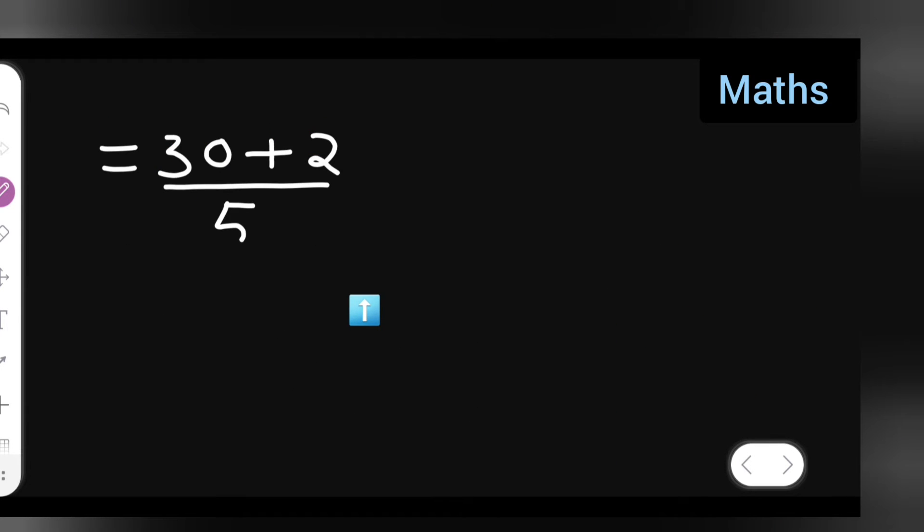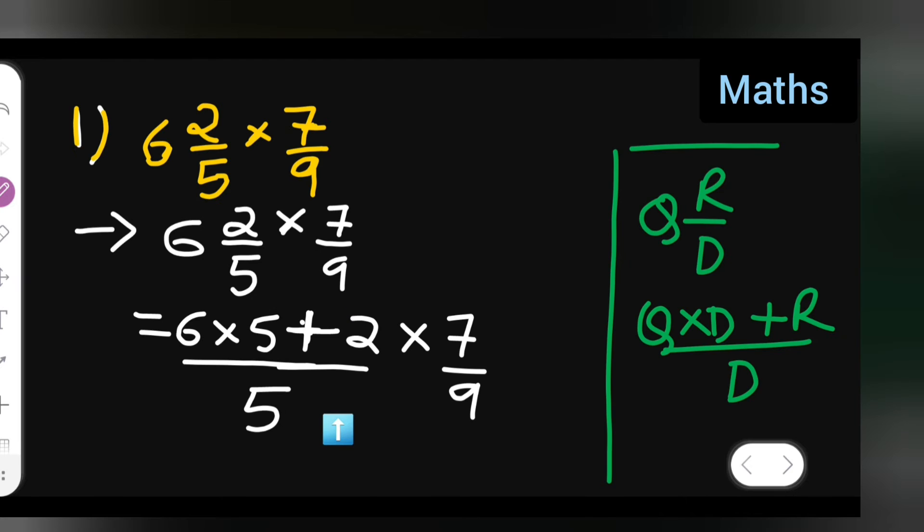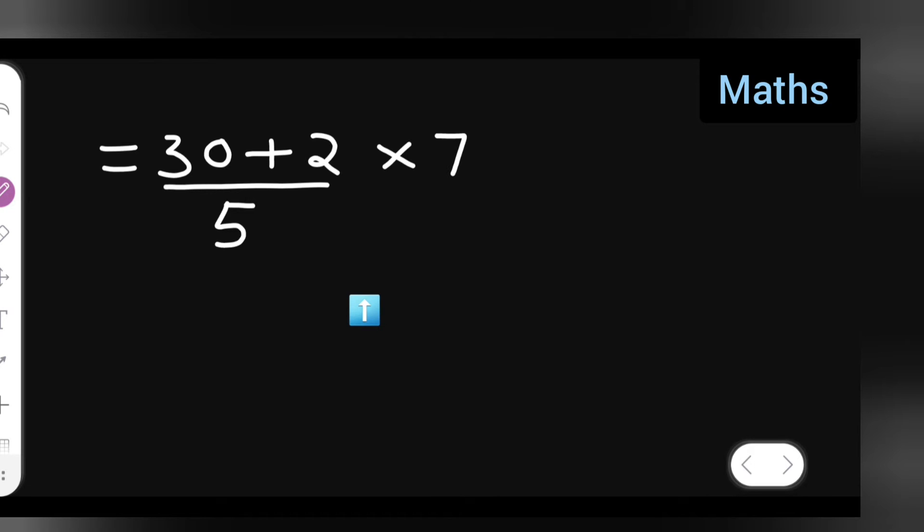But write in steps: 6 fives are 30, so write down 30 plus 2 upon 5, multiplied by 7 upon 9. Write this in steps so that you will get good marks.